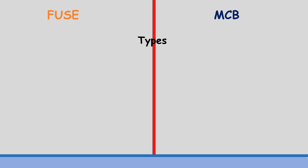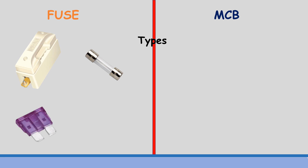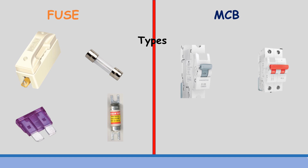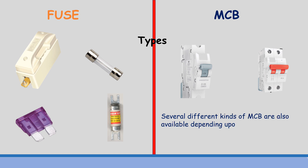Depending upon various functions and applications, fuses are of different types such as: rewirable fuse, cartridge fuse, automotive fuse, and link fuse. The different types of MCBs include single pole MCB and double pole MCB. Several other kinds of MCBs are also available depending upon the tripping range: Types A, B, C, D, K, and Z.